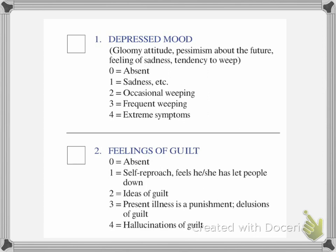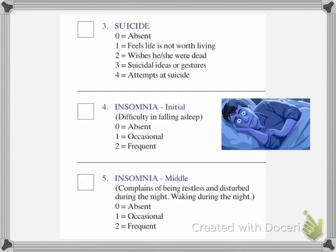Question two is feelings of guilt. If nothing is present, mark it zero for absent. If she feels she has let down some people, mark it a one. If they have ideas of guilt, mark it a two. If they feel they need to be punished or have delusions of guilt, mark it a three.